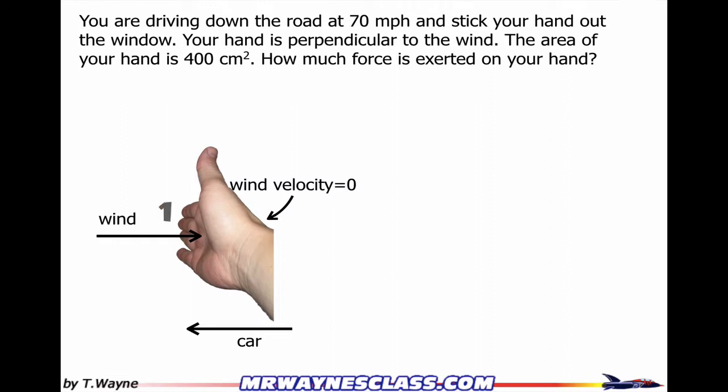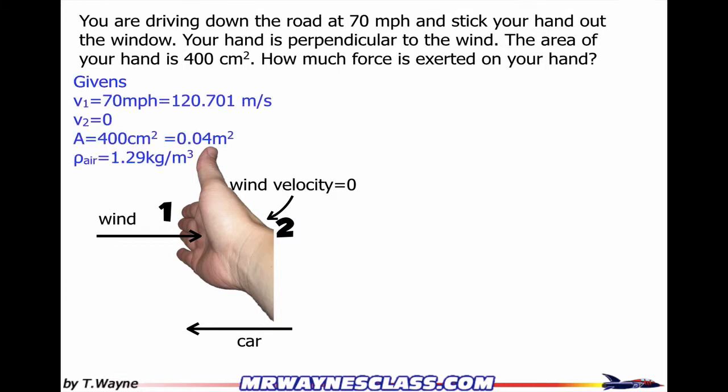And we have two sides. I'll call them number side one, which was the wind side, and number two, where there's no wind. So if I look at the givens, I've got the V1 going into my hand at 70 miles per hour, which is 120.701 meters per second. Behind my hand, the air is still, so that's zero.